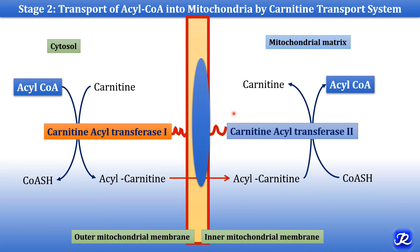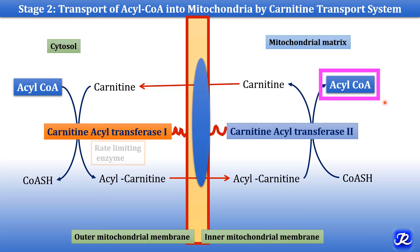The acyl-carnitine must be trapped inside the mitochondrial matrix. Coenzyme A is added by carnitine acyl transferase 2, regenerating acyl-CoA and free carnitine. The carnitine is then transported back to the cytosol, and the acyl-CoA in the mitochondrial matrix is further oxidized by beta oxidation.